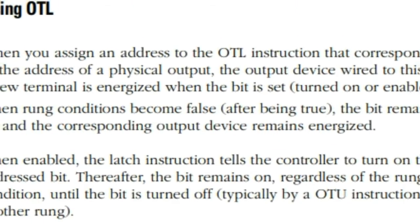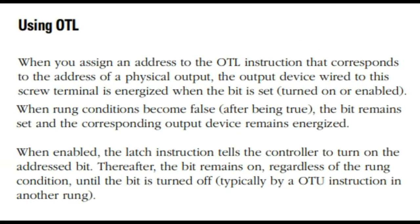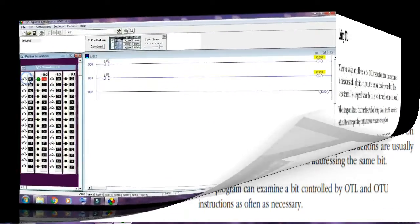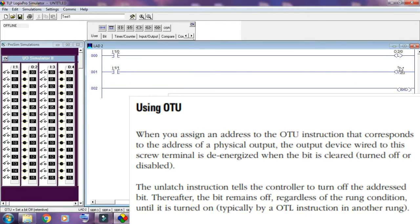Using OTL — when you assign an address to the OTL instruction that corresponds to the address of the physical output, the output device wired to this screw terminal is energized when the bit is set, turned on, or enabled. When the rung condition becomes false after being true, the bit remains set and the corresponding output device remains energized. The latch instruction tells the controller to turn on the address bit; thereafter, the bit remains on regardless of the rung condition, until the bit is turned off, typically by an OTU instruction in another rung.